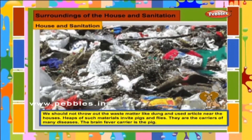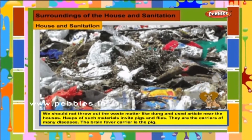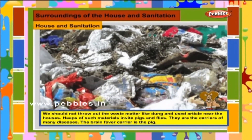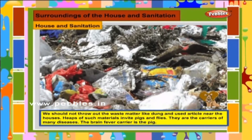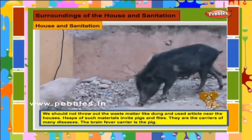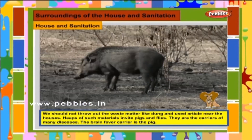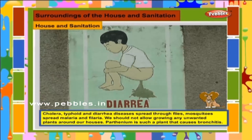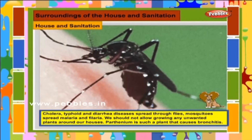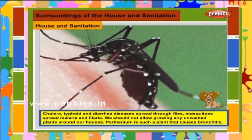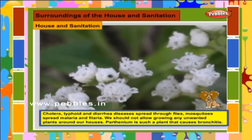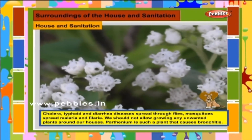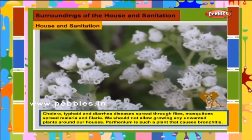We should not throw out waste matter like dung and used articles near the houses. Heaps of such materials invite pigs and flies, which are carriers of many diseases. The pig is the carrier of brain fever. Cholera, typhoid and diarrhoea spread through flies. Mosquitoes spread malaria and filaria. We should not allow unwanted plants to grow around our houses.